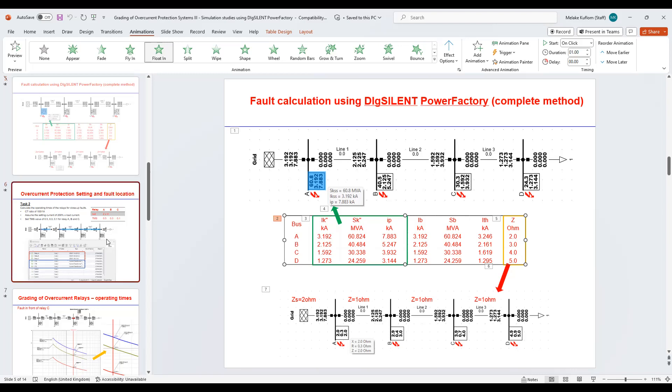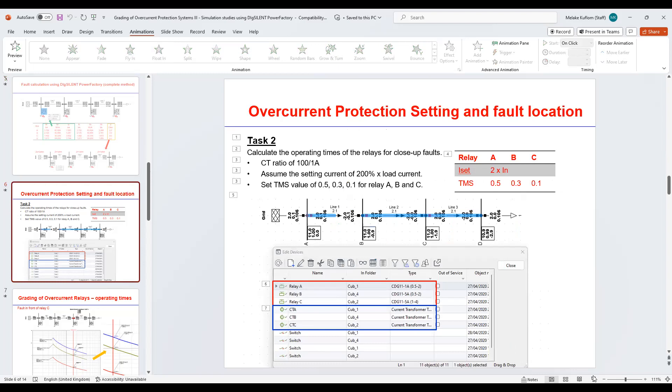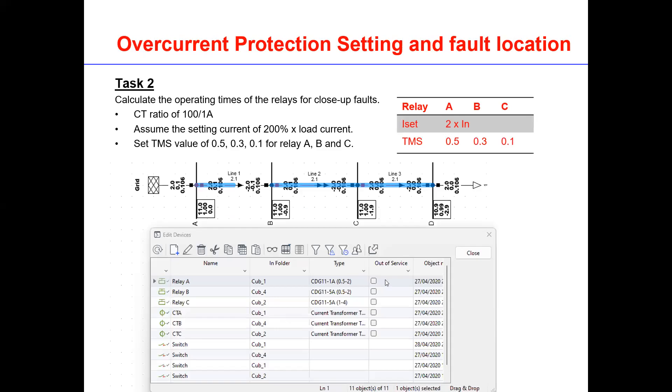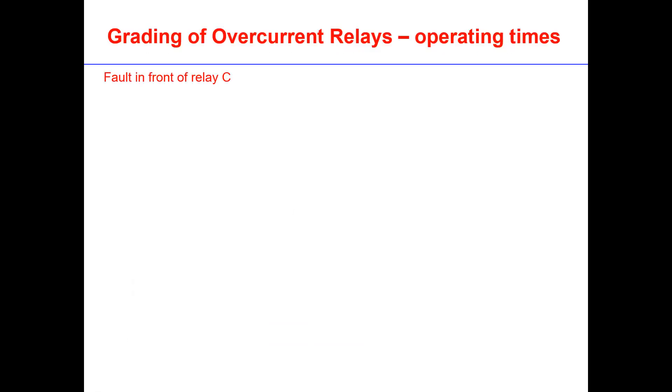From that, we can do the next step, which is the relay setting calculations, which is classical. We need to calculate the operating times of the relay for close-up faults, just when fault is in front of the relay. We need to consider the setting current is 2 times the loading current. And then of course add different TMS for each relay. If we look at here, the TMS is 0.5 for relay A, and then relay B is 0.3, and relay C is 0.1. And then of course this is just configured in DIgSILENT. This is relay A, B, C, and CTA, B, C for transformers.